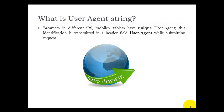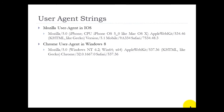Before we jump into how to perform performance testing, we will see what a user agent string is. A user agent string is a unique string assigned to each device, browser and tablet. This is sent along with the request as part of the header fields. Here is a sample user agent string for Mozilla on iOS, and the second entry represents the Chrome user agent for Windows IE.